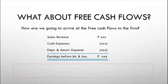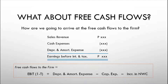Once you have EBIT, you can arrive at the free cash flows to the firm using the following formula: EBIT times (1 minus tax rate), plus depreciation and amortization expense — since this is a non-cash expense and should be added back — less any capital expenditure incurred in the year, and less any increase in net working capital, as this will consume cash flows.